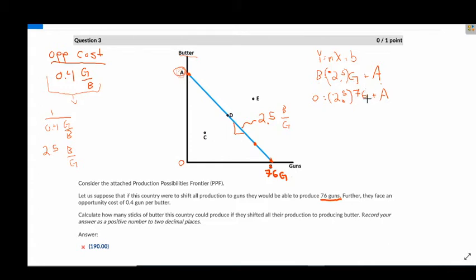Let's move this 2.5 times 76 over. So we're adding it to both sides. So we're now going to have 2.5 times 76 equals a. And 2.5 times 76 is 190 equals a, where a again is the amount of butter we could produce if we shifted all of our production into butter.